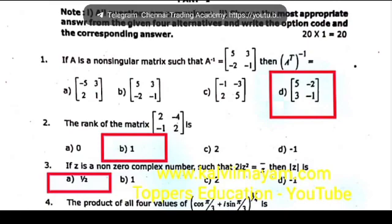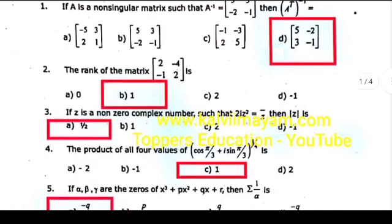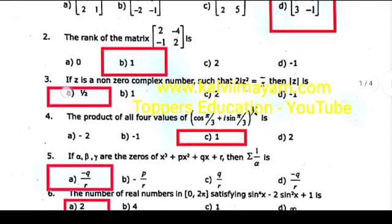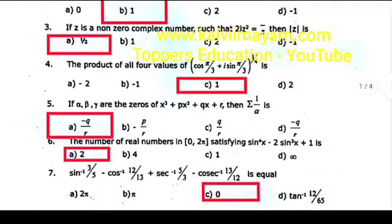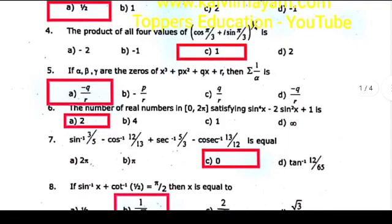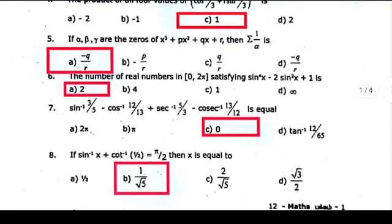First, option D. Second, option B. Third, option A, one by two. Fourth, option C. Fifth, option A, minus Q by R. Sixth, option A, 2.